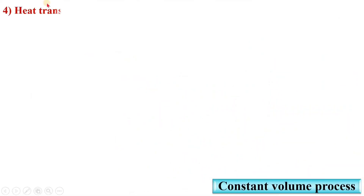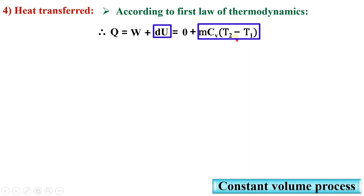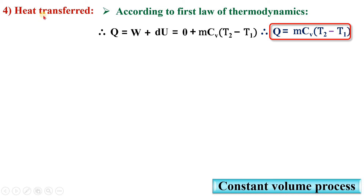Next, heat transfer during the constant volume process. According to the first law of thermodynamics, Q = W + du. Since the work done during the constant volume process is 0, and du = mCv(T2 − T1), we get Q = mCv(T2 − T1). So heat transfer during the constant volume process is always mCv ΔT.